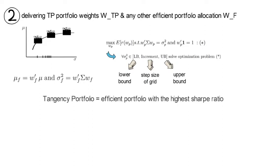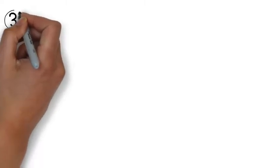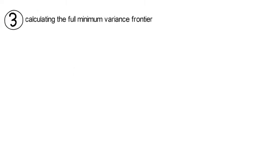Now you're going to find the tangency portfolio as the efficient portfolio with the highest Sharpe ratio. Now the upcoming third approach for getting the tangency portfolio is to calculate the full minimum variance frontier. The upper part of that frontier is the efficient frontier. The lower part is the inefficient frontier. Similar to the previous approach, you find the tangency portfolio as the efficient portfolio with the highest Sharpe ratio.